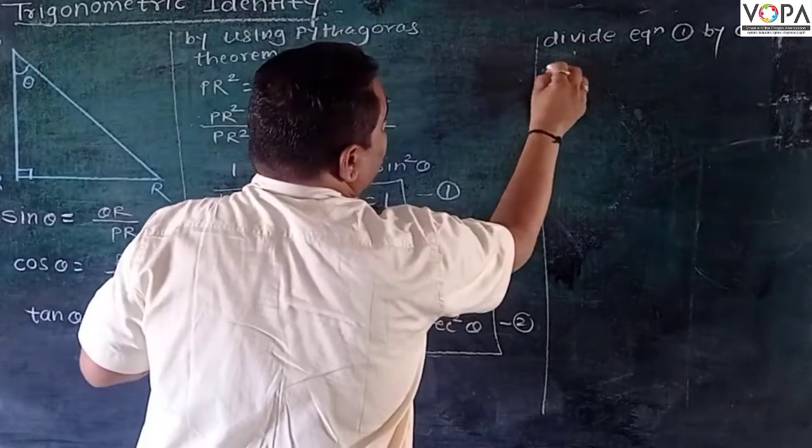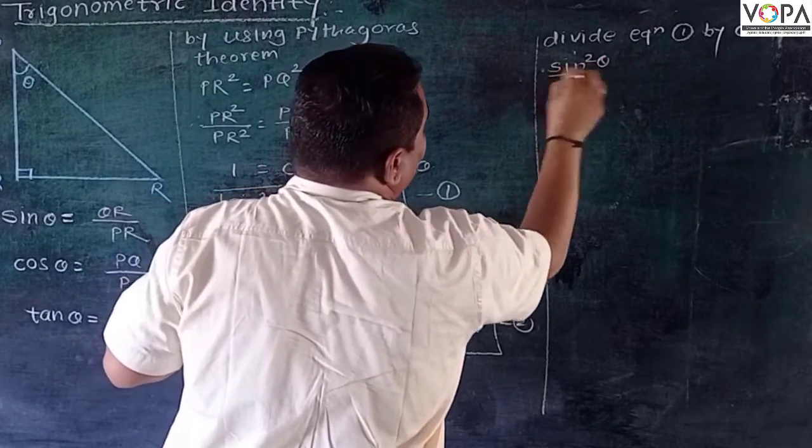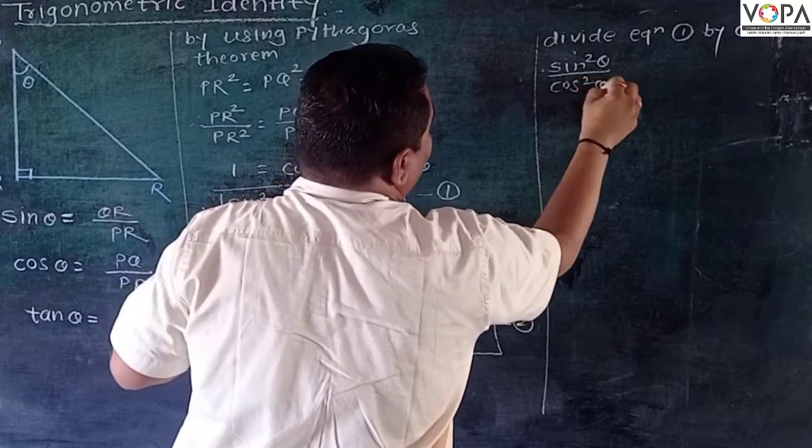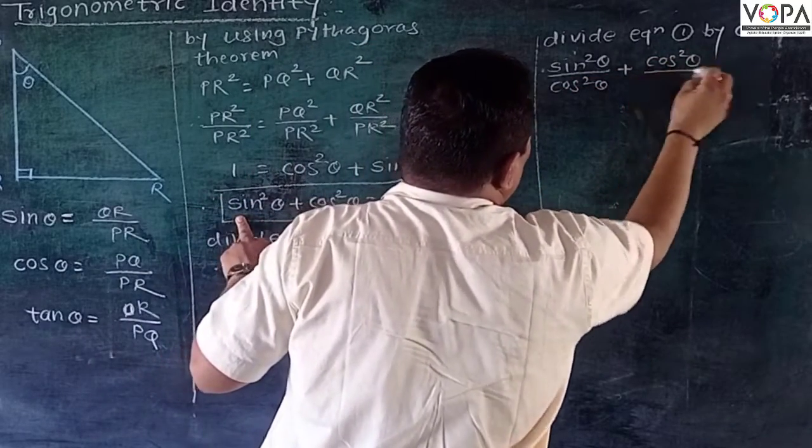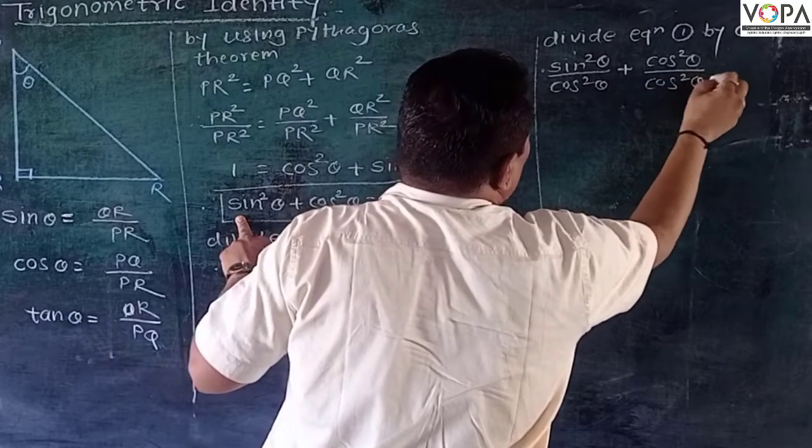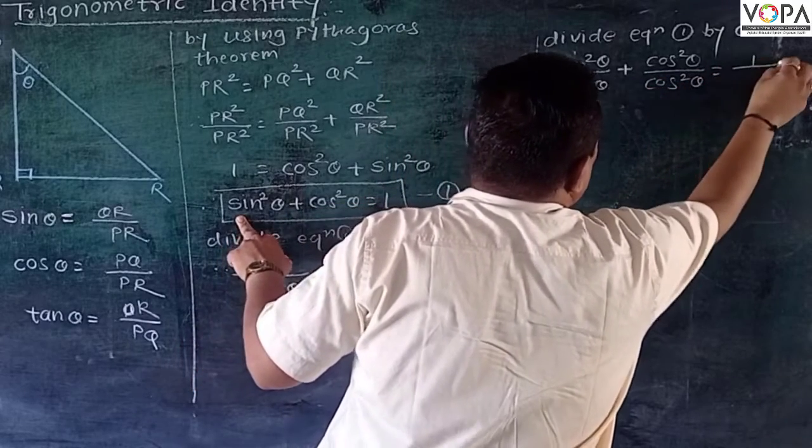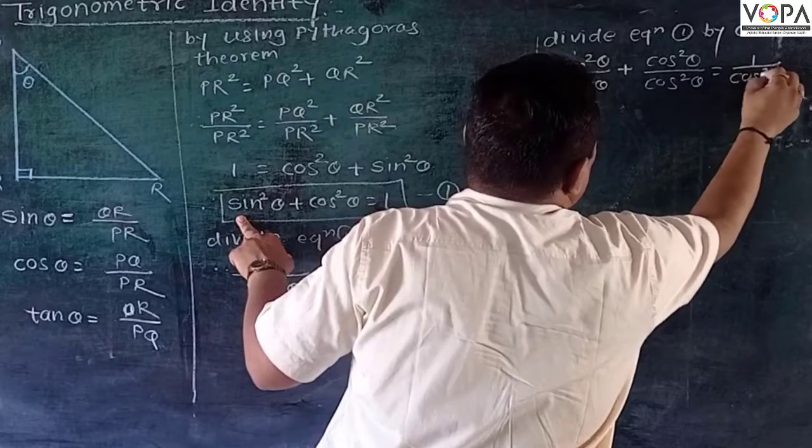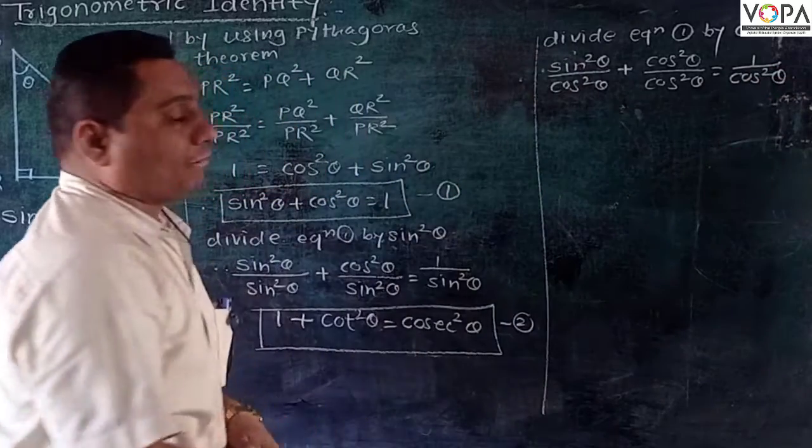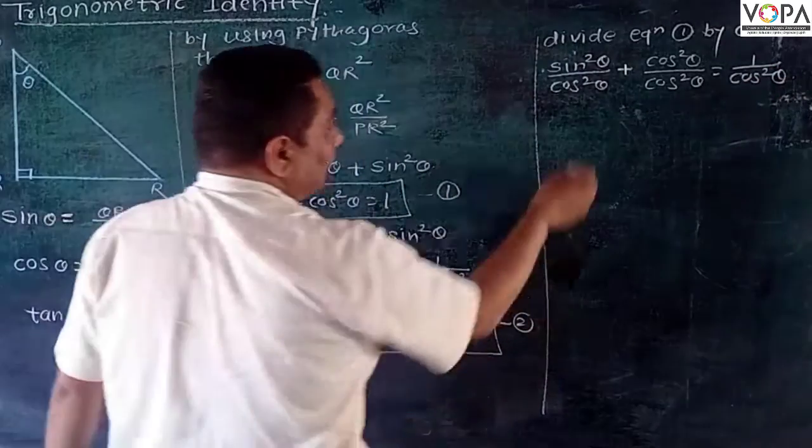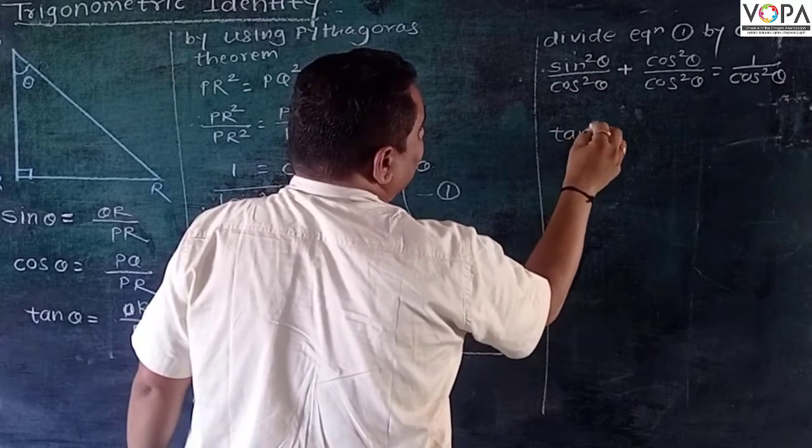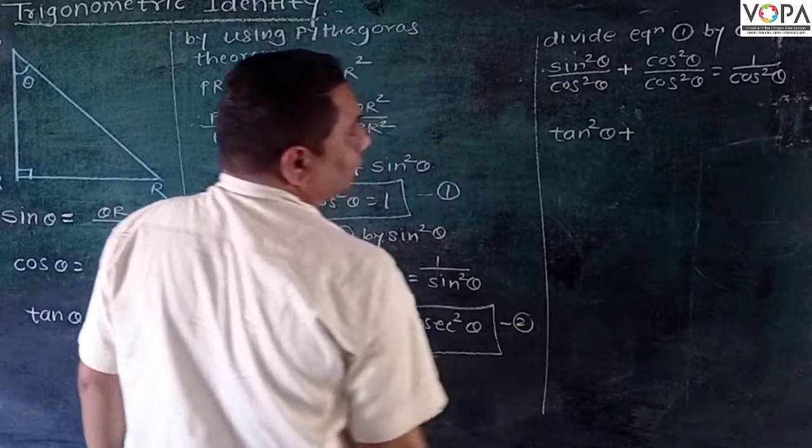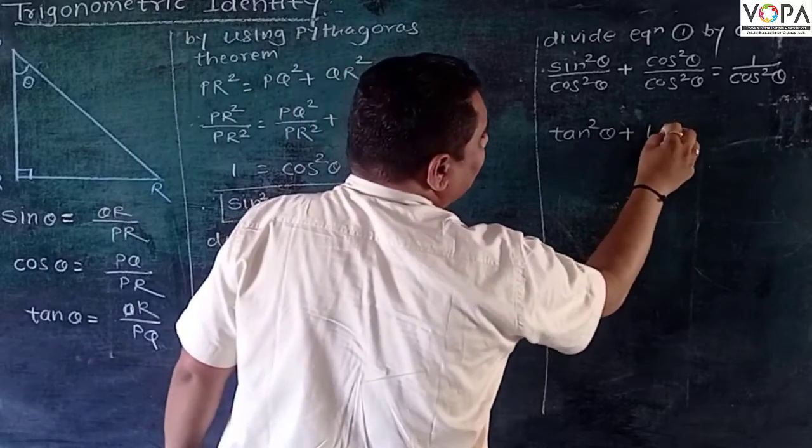Look at here. Sin square theta upon cos square theta plus cos square theta upon cos square theta equals 1 upon cos square theta. We know that sin upon cos is tan ratio. So tan square theta plus 1 equals